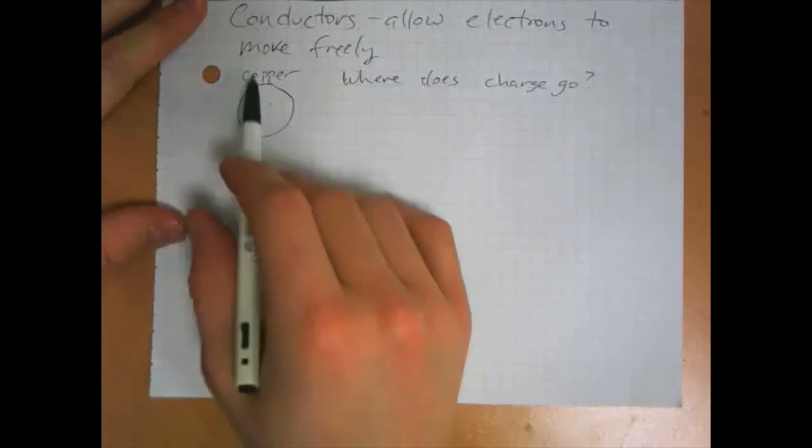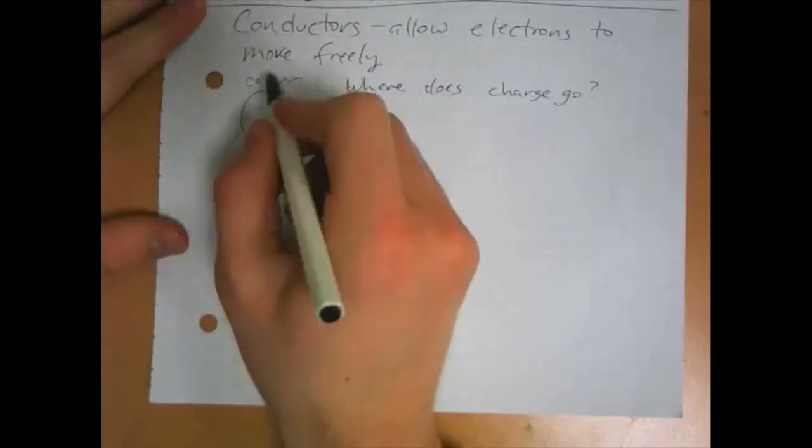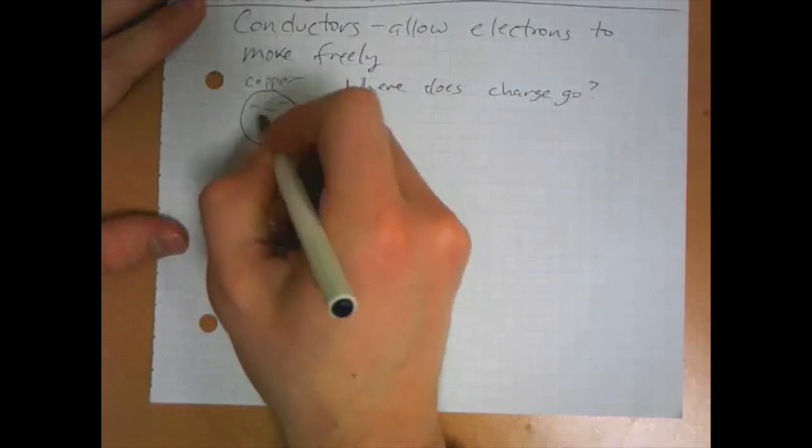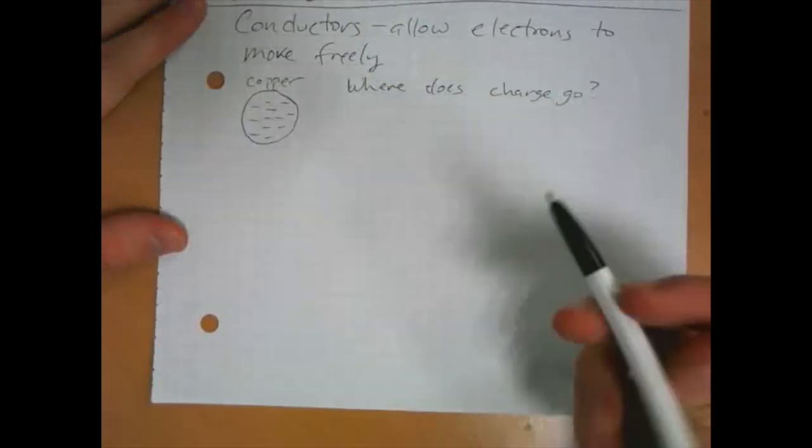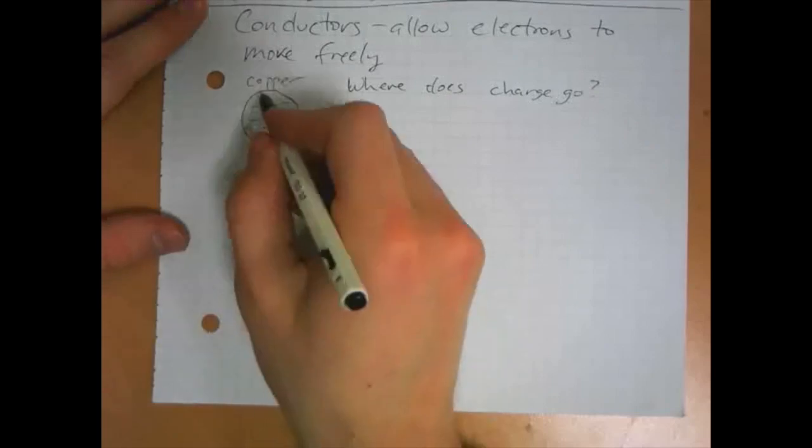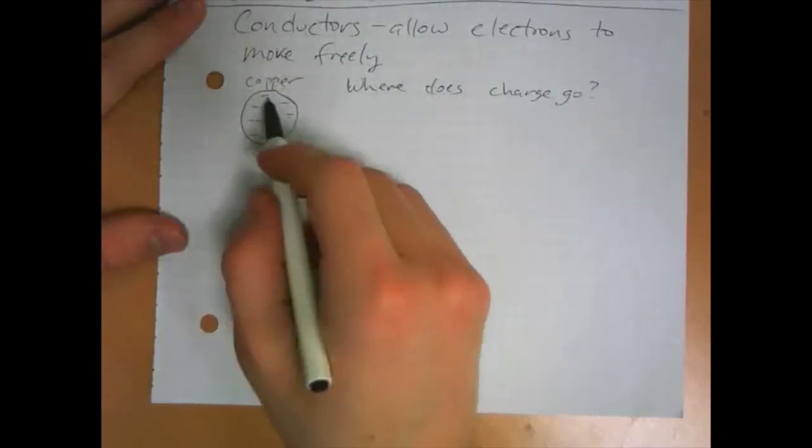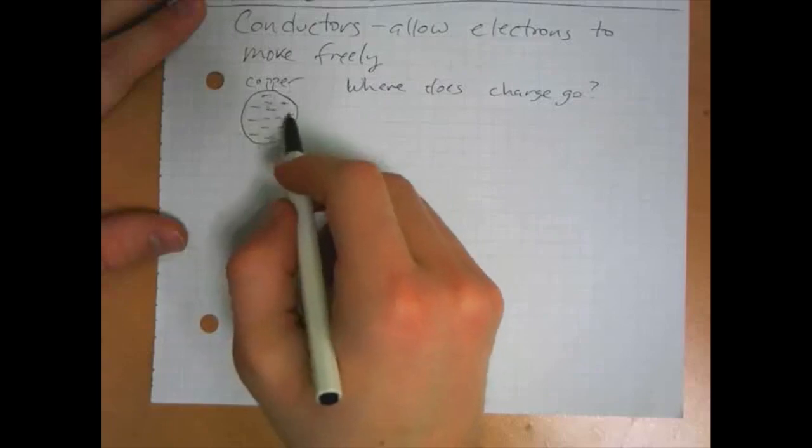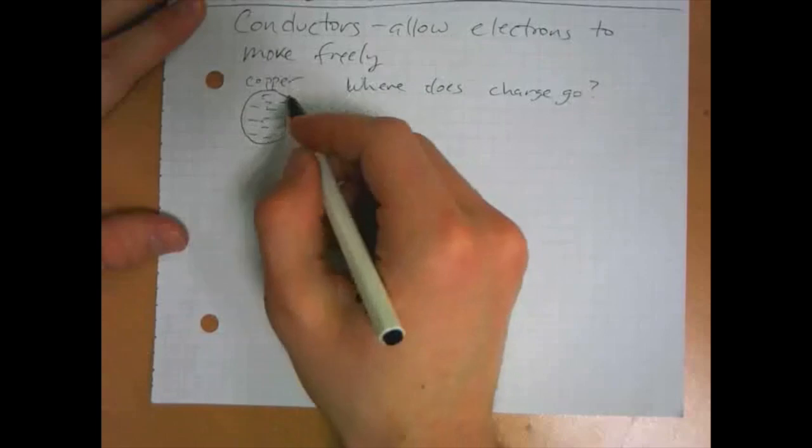So let's assume for a second that the charge was uniformly distributed throughout the thing. That might be a natural assumption to make. Now what would happen? This charge on the outside here, it's got forces on it from all these other charges. They're repulsive forces, so it's going to push it toward the outside.